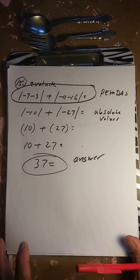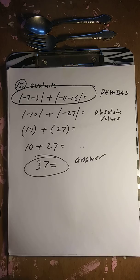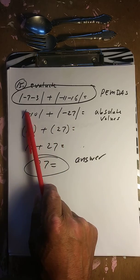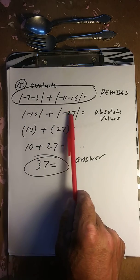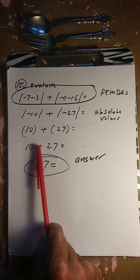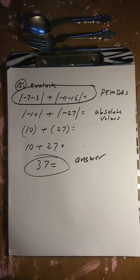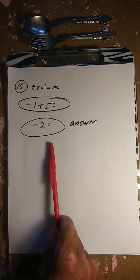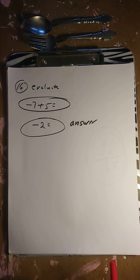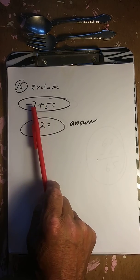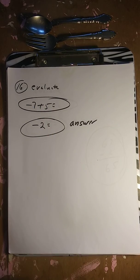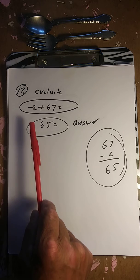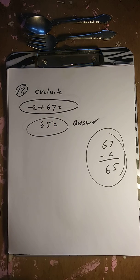Absolute value of (negative 7 plus negative 3): negative 7 plus negative 3 is negative 10, absolute value of that is 10. Absolute value of negative 27 is 27. So 10 plus 27 is 37. Next: evaluate negative 7 plus 5, which is negative 2. Then negative 2 plus 67 is 65.